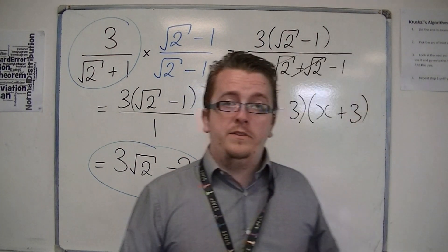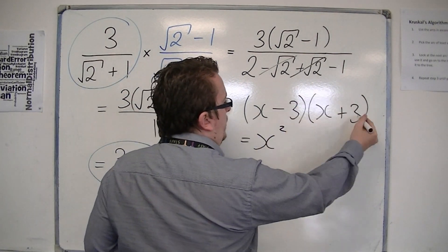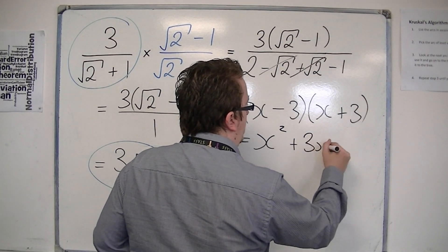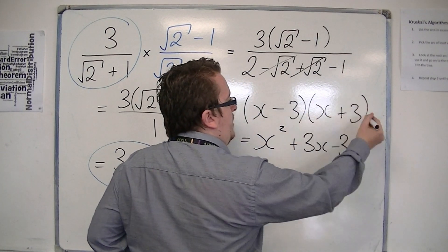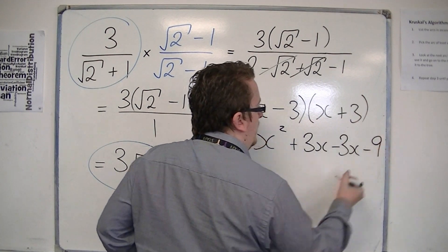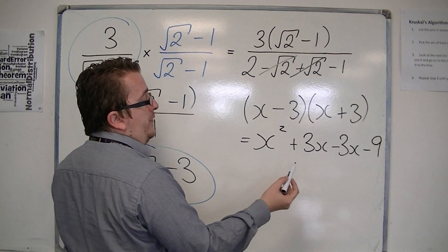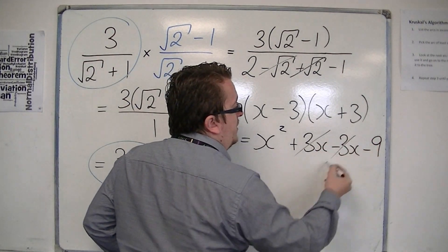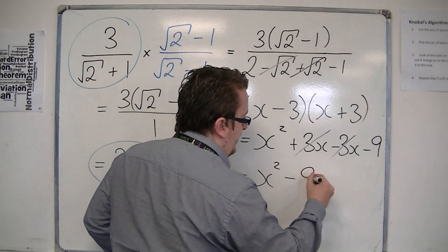and you multiply those two things together, you get x times x is x squared, x times 3 is 3x, minus 3 times x is minus 3x, and minus 3 times 3 is minus 9. So in the same way that the minus root 2 and the plus root 2 cancelled out, the plus 3x and the minus 3x cancelled out, and you just get left with x squared minus 9.